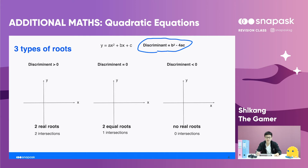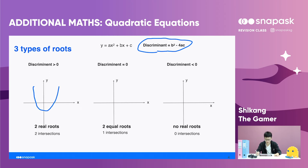There are three scenarios for the discriminant. First, it may be more than zero, so there will be two real roots — the graph will have two intersections with the axis. When the discriminant is equal to zero, we will have two equal roots, meaning the graph will intersect the axis at one point only. It will look like this.